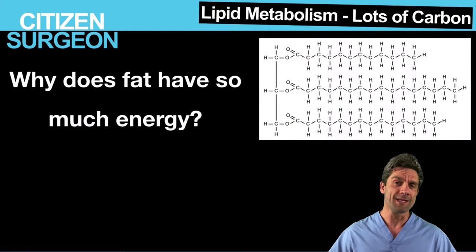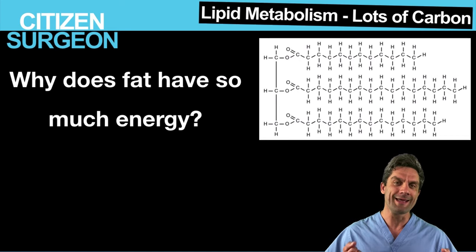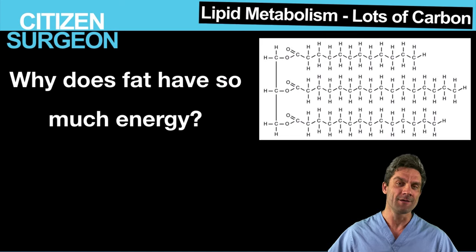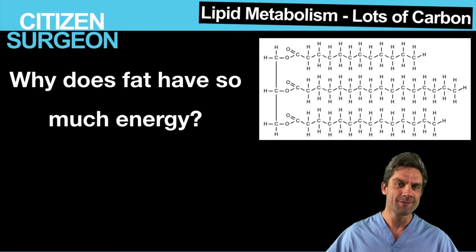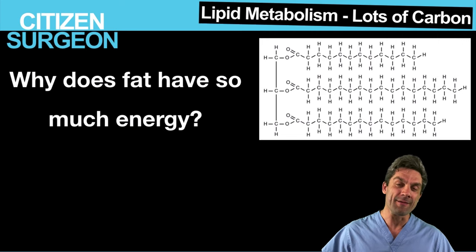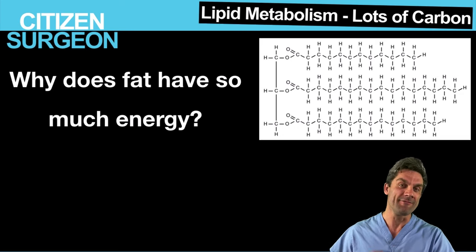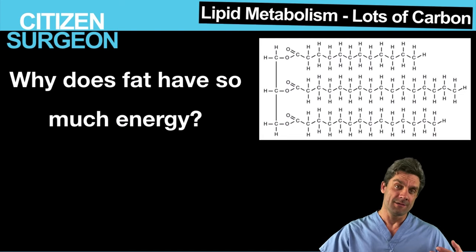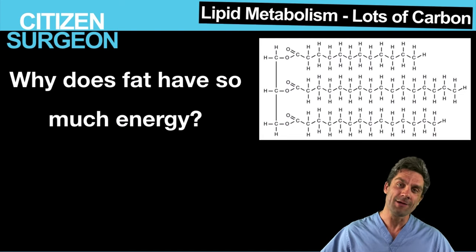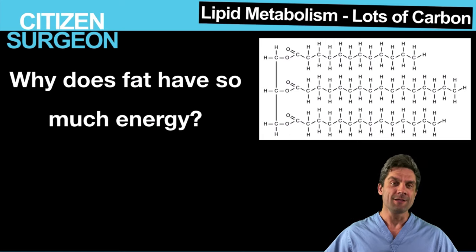Moving on to lipids — remember that lipids are the primary fuel after trauma and injury, especially for the liver. But why do lipids produce so much energy? When we look at the amount of energy per gram of metabolite — calories per gram of protein, per gram of carbohydrates, per gram of fat — protein gives you four kilocalories per gram, every gram of carbohydrate gives you four calories, and every gram of fat gives you nine calories.